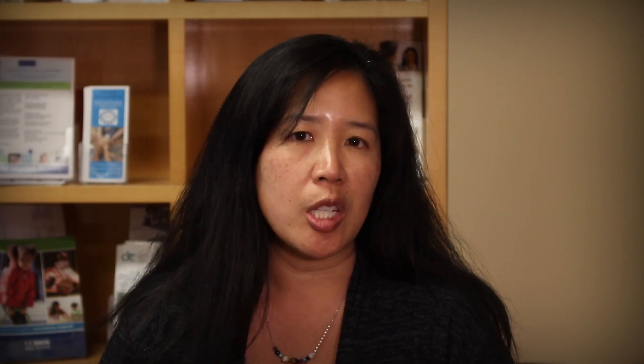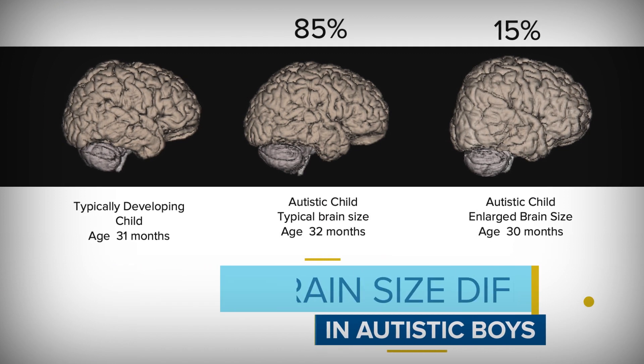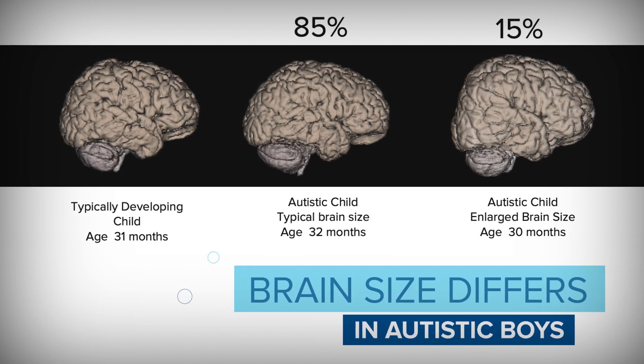We know that there are fewer girls diagnosed with autism. We've shown in some of our studies from the APP that there are different neurobiological signatures from boys and girls with autism. We're really delving into how subgrouping may differ based on gender and biological sex in relation to how the brain is growing and what the behavioral presentation is. We found that about 15% of autistic boys have enlarged brains, and this type of autism doesn't seem to affect girls as much.